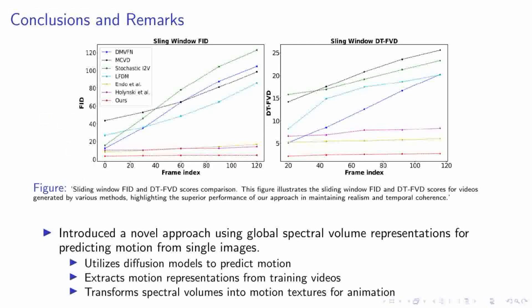As we conclude our presentation, let's reflect on the significant strides we've made with our novel approach in video synthesis from single images. By leveraging global spectral volume representations, our method not only predicts but also vividly animates motion, setting a new standard in realism and temporal coherence. The figure displayed here underscores our method's superiority by comparing the sliding window FID and DTFVD scores across various methods — metrics that quantify the quality and consistency of video synthesis over time. Our technique harnesses diffusion models to extract robust motion representations from training videos, which are transformed into detailed motion textures, enabling us to animate static images with unprecedented realism.